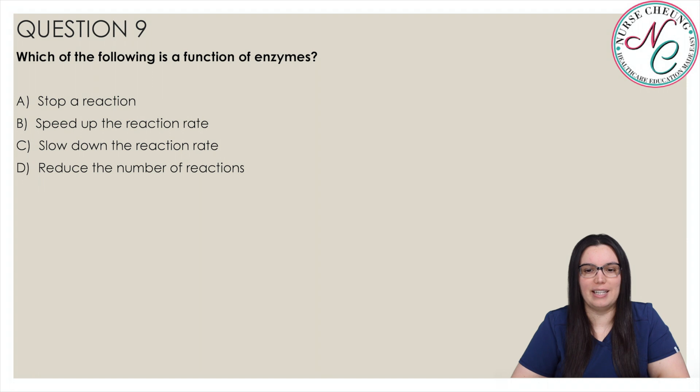Which of the following is a function of enzymes? Is it A stop a reaction, B speed up a reaction, C slow down the reaction rate, or D reduce the number of reactions? And the correct answer is B speed up the reaction rate. Enzymes serve as catalysts in chemical reactions. They speed up reaction times by lowering the energy required to activate a reaction. They change the environment in which a reaction takes place without being altered by the reaction themselves.